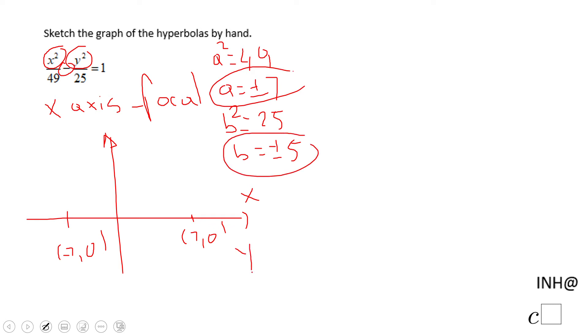That will allow you to find the asymptotes, which are going to be plus or minus 5 over 7x. So you grab those two asymptotes, let's say something like this—they go through the origin and then you go asymptotic with these two asymptotes.